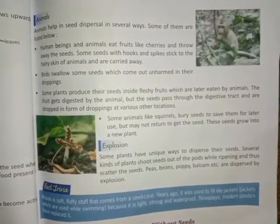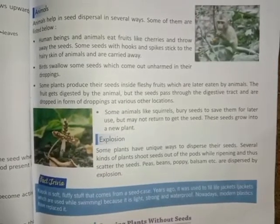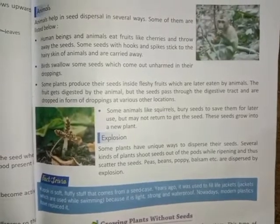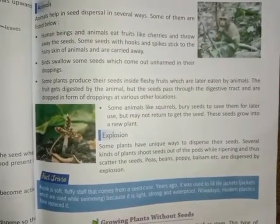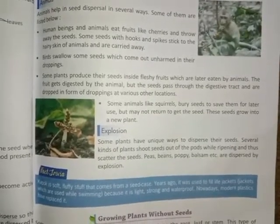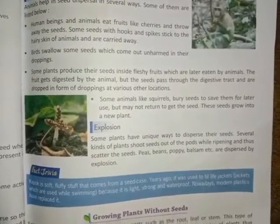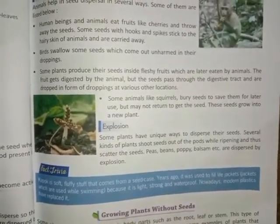Explosion: some plants have a unique way to disperse their seeds. Several kinds of plants shoot seeds out of the pods while ripening and thus scatter the seeds. Few examples are peas, beans, poppy, balsam etc. These plants are dispersed by explosion. Thank you children.